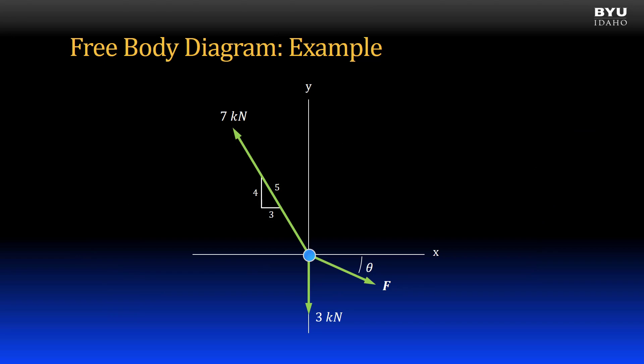Here's a simple free body diagram. The particle is at the origin of the x and y axes. Sometimes I will take the time to draw in the x and y axes and other times they may not be needed. In this problem, I will draw on the axes because the angle of one of the forces, f, is measured from the x axis. You can see a downward force from the origin of three kilonewtons and in the second quadrant, a force of seven kilonewtons that follows a similar triangle of three four five proportions.